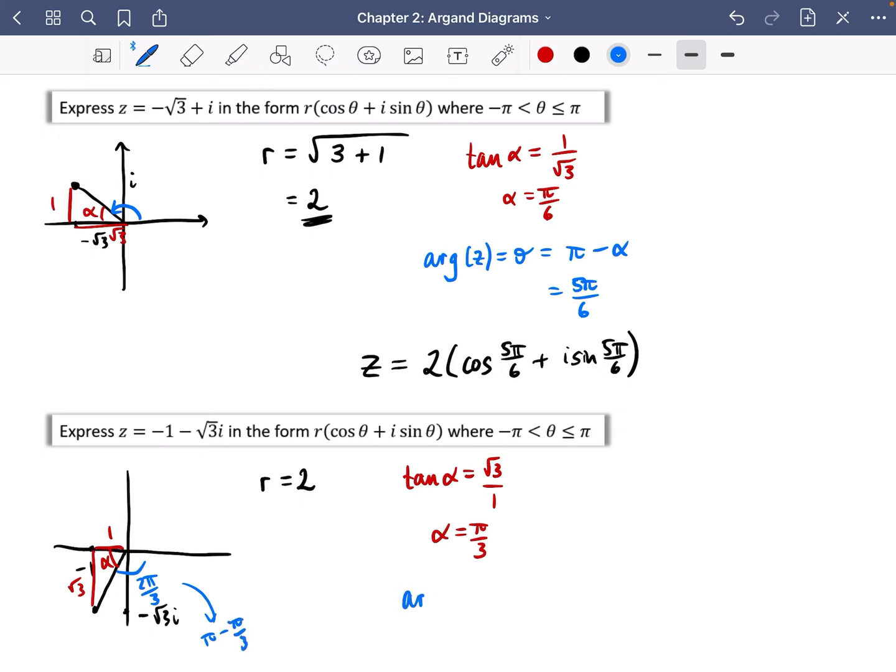So that tells me that the argument of z, which is theta in this case, is going to be minus two pi over three, because it's going that negative direction. So pulling all of that together, z is going to be equal to 2(cos of minus two pi over three + i sine minus two pi over three), making sure to put the brackets around the argument there because there's a negative for the angle.